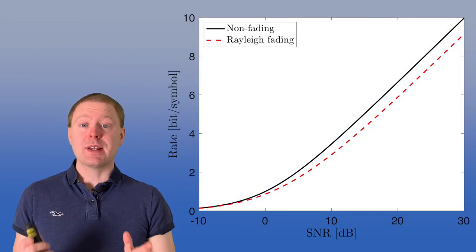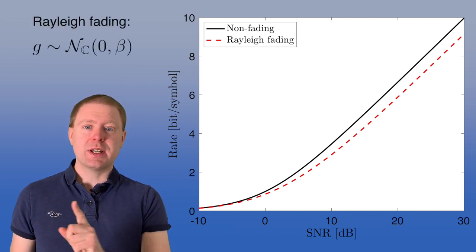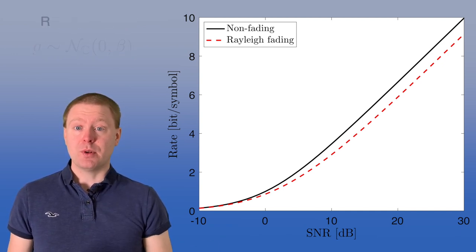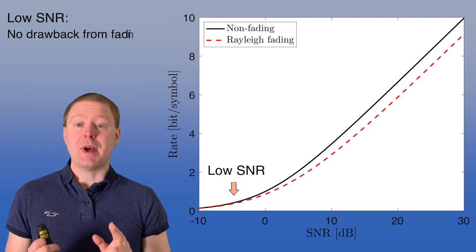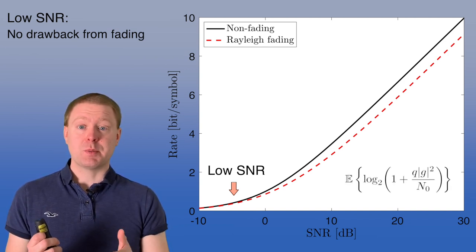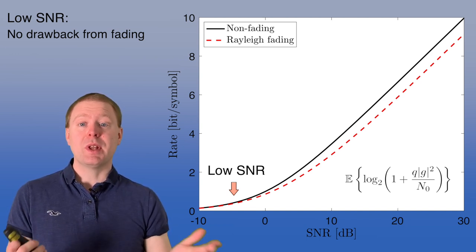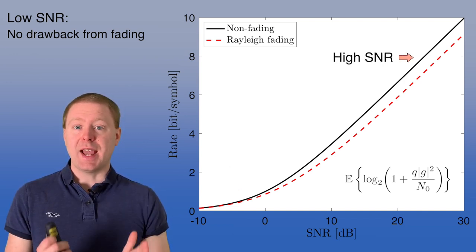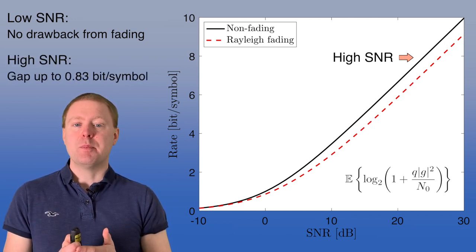Here is an example comparing the non-fading case with the fast Rayleigh fading case. For the same SNR — shown in dB on the horizontal axis — the vertical axis shows the rate in bits per symbol. At low SNR, the two curves are overlapping, showing there is no drawback of having a random channel. This is because log(1 + SNR) is approximately linear, so if the SNR is sometimes lower and sometimes higher than its average value, that averages out. But at high SNR, we have a gap.